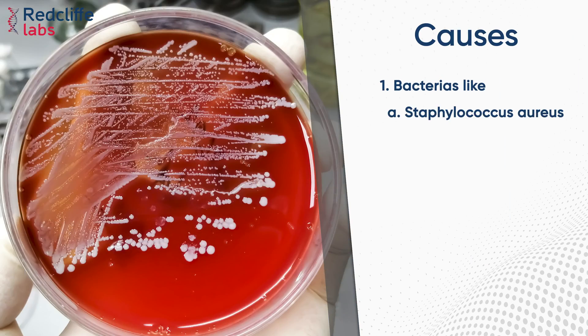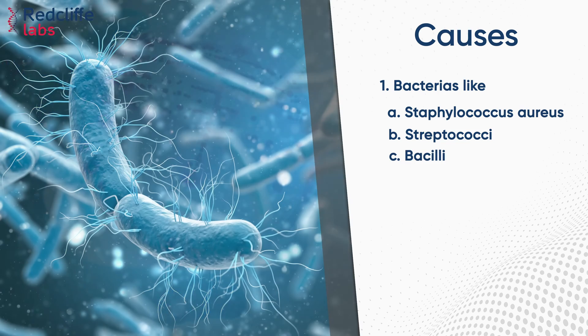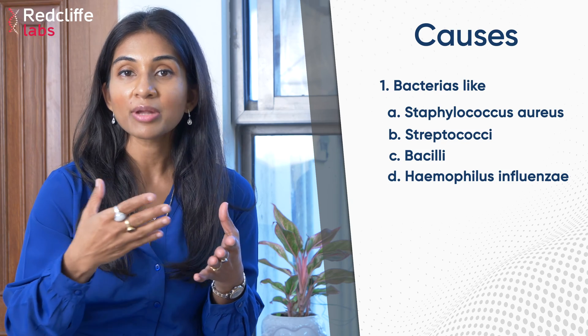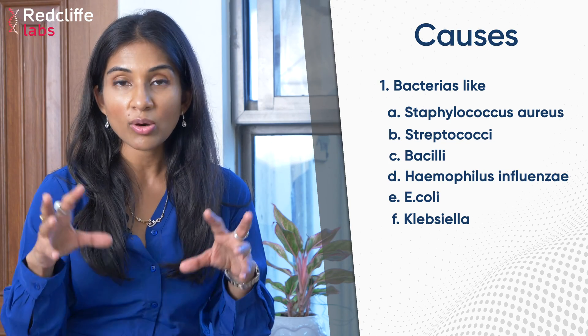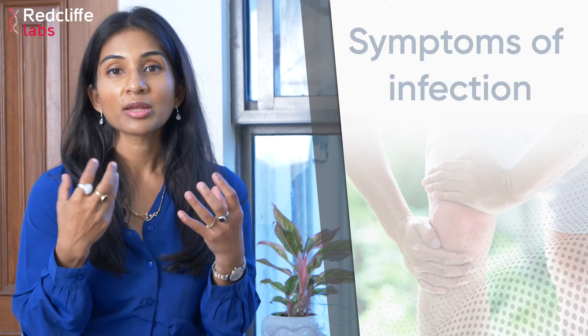Septic arthritis can be caused by certain bacteria or at times viruses, but most commonly it is because of bacteria like Staphylococcus aureus. Sometimes other gram-positive cocci like Streptococci, gram-negative bacilli including H. influenzae in children, as well as other gram-negative bugs like E. coli and Klebsiella, can also result in infection of the joint.